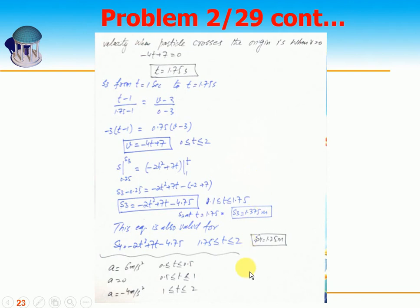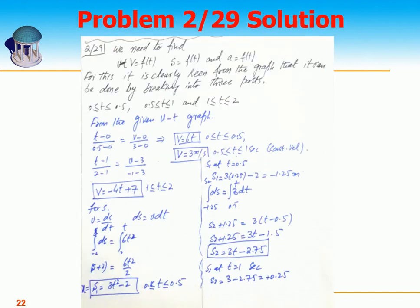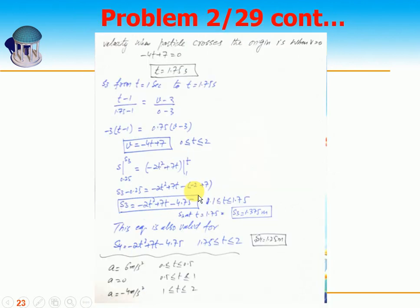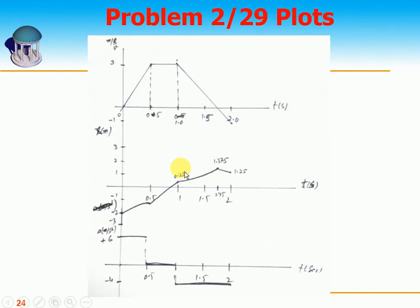Finding acceleration is very simple. For the first velocity function v equals 6t, taking the derivative gives acceleration equals 6 meters per second squared. In the second case, velocity is constant so acceleration is 0. In the third case, the derivative of minus 4t plus 7 gives deceleration of minus 4 meters per second squared.